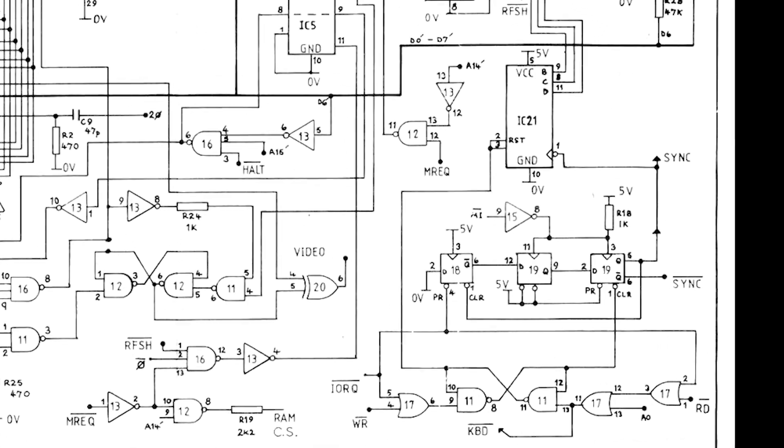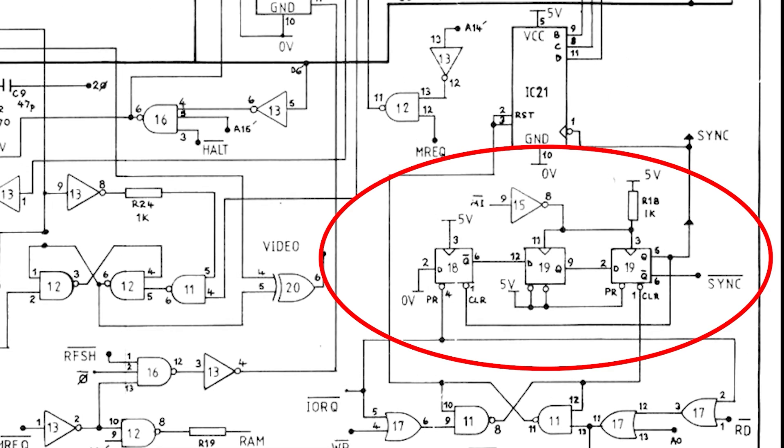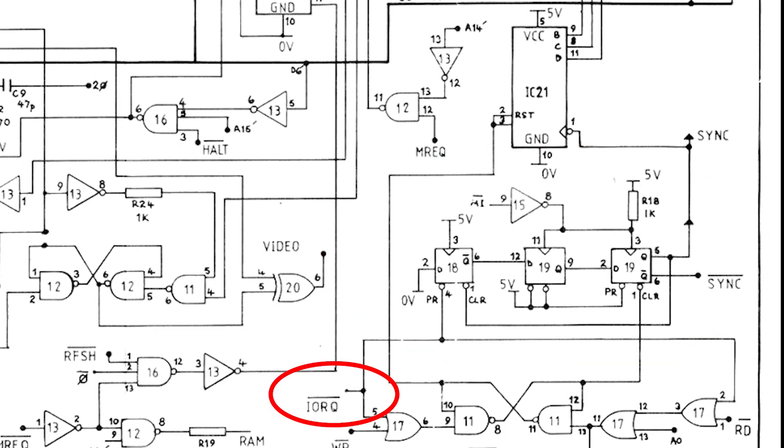On the schematic diagram, we have this set of three flip-flops which converts this IO-REC signal that occurs during interrupt acknowledge and generates horizontal sync.